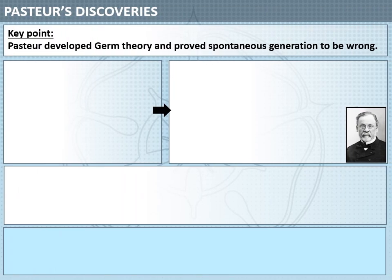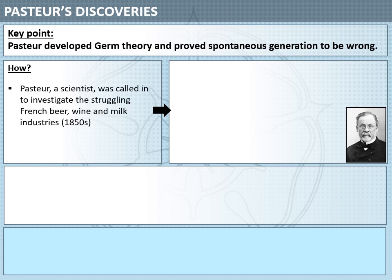That's important to know because Louis Pasteur's main discovery is that he proves spontaneous generation to be wrong and develops in its place germ theory. Louis Pasteur is a scientist in France who is called in to investigate the struggling French beer, wine, and milk industries in the 1850s. He observes in each of these liquids that there are microbes causing them to turn bad.